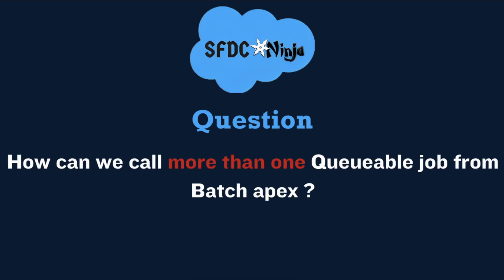Next question: how can we call more than one Queueable job from batch Apex? Since we cannot call more than one Queueable job from batch, we can go for scheduling the Queueable jobs. In this approach, we first check the current number of Queueable jobs in the queue using limits.getLimitQueueableJobs. Then, if the number reaches the limit, we create a schedulable class and inside its execute method, we enqueue the Queueable job. By this way we can call more than one Queueable class from batch.